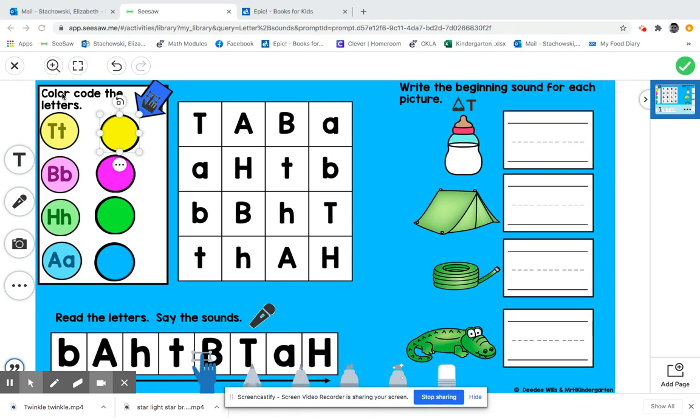So what you're going to do for right here, color code the letters. You're going to come down here and you see there is a picture of the hand that's pointing to the square. You're going to click on that. Then it allows you to move these guys over.